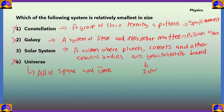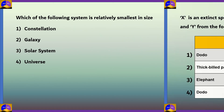We can cancel options 2 and 1 because constellations are found inside a galaxy. Also, the solar system is much smaller than a constellation because its stars are close to each other, while stars in a constellation are very far apart — even if they appear close from Earth. So option 3, solar system, is the correct answer as it is relatively smallest in size.